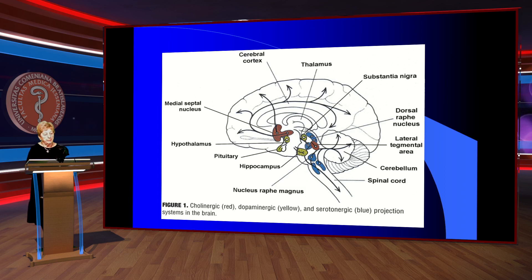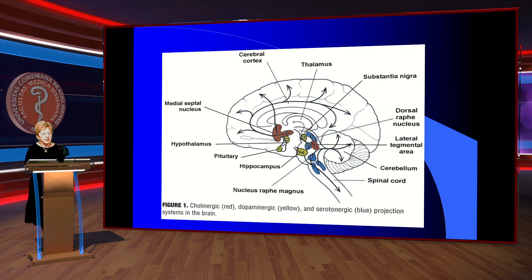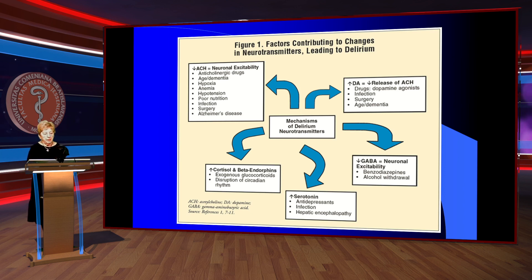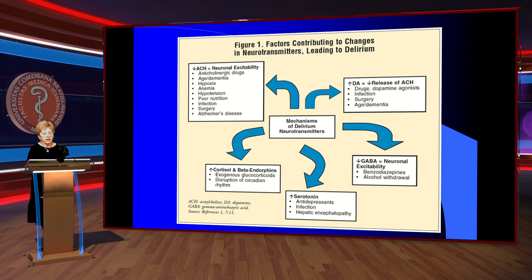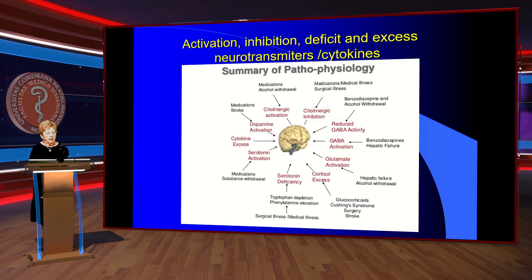The whole energy dopamine and serotonin projection system in the brain is affected after damage in this state. The mechanism of delirium involves multiple neurotransmitters including GABA, glutamic acid, dopamine, acetylcholine, cortisol, and many others. Activation, inhibition, deficit, and excess of neurotransmitters and cytokines are summarized on this slide.